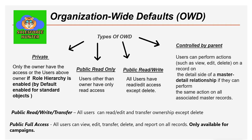Controlled by Parent means users can perform actions such as view, edit, and delete on a record on the detail side of a master-detail relationship if they can perform the same action on the associated master record. Simply put, if a user can perform operations on the master (parent), they can also perform those same operations on the child (detail) object.